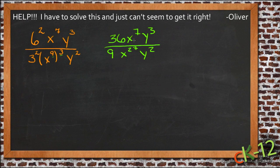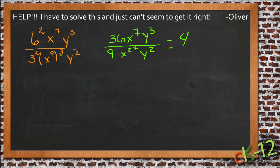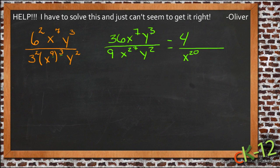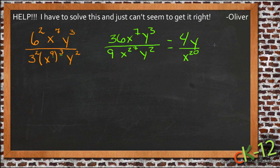Now, we can cancel mentally. 36 divided by 9 reduces to 4. With 7 x's on top and 27 x's on the bottom, 7 of those cancel, leaving 20 on the bottom — so x to the 20th. For y, 3 on top minus 2 on the bottom leaves 1 on top, so just y. We end up with 4y over x to the 20th. That's the reduced form of the initial expression, Oliver.